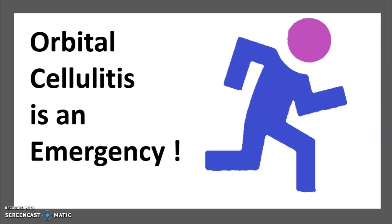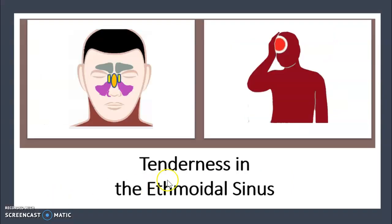Regarding epidemiology of orbital cellulitis: children are approximately 16 times more likely to suffer from it. It is more common among males. There is tenderness in the ethmoidal sinus.